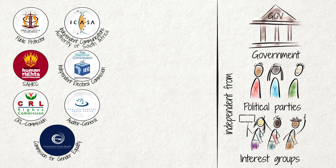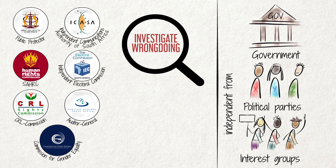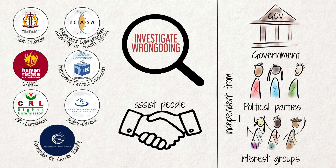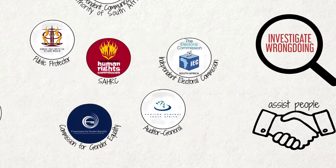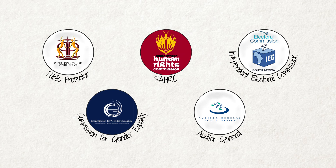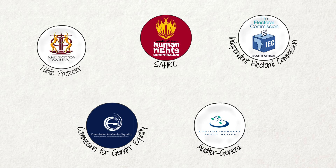They act as watchdogs by investigating wrongdoing and assisting people who struggle to gain access to government services. Some of these institutions are discussed in this video. Each institution plays a different role.